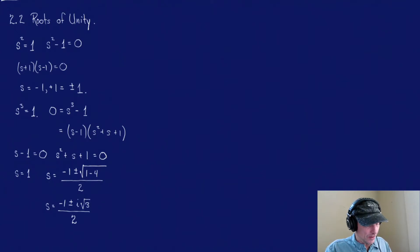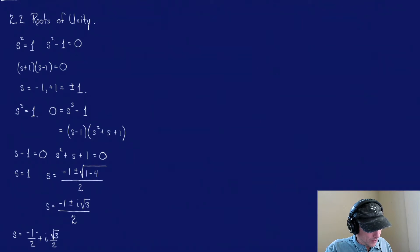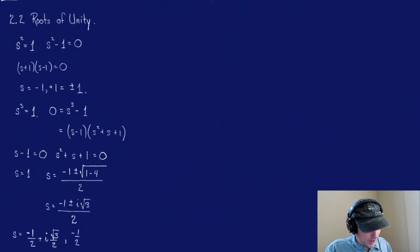So what do we have? Our solutions now are, I'm going to write them in this order: s equals negative 1 half plus i times the square root of 3 over 2, and my next solution is negative 1 half minus i square root of 3 over 2, and our final solution is just 1.